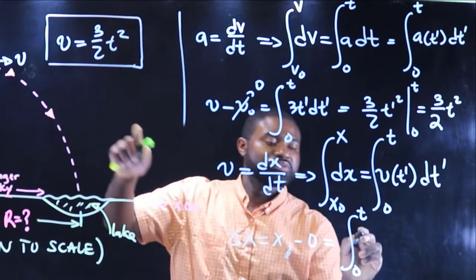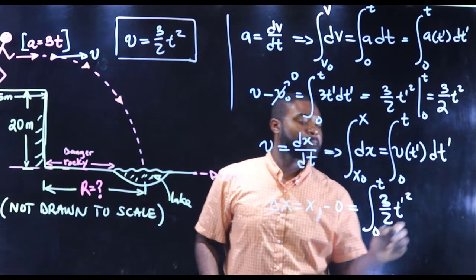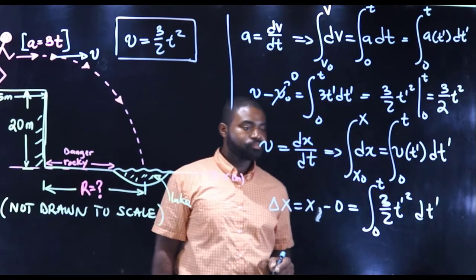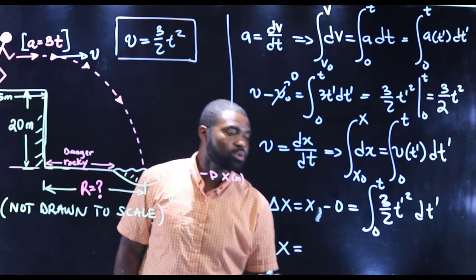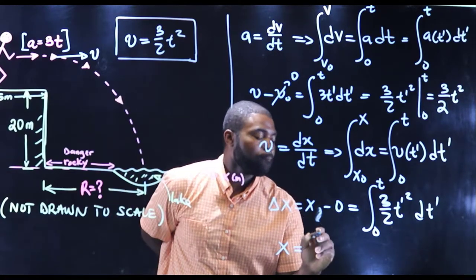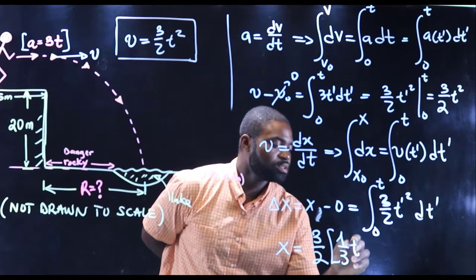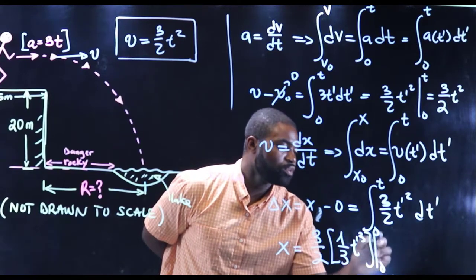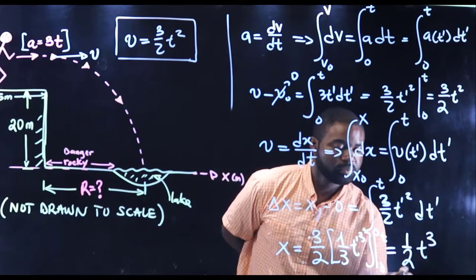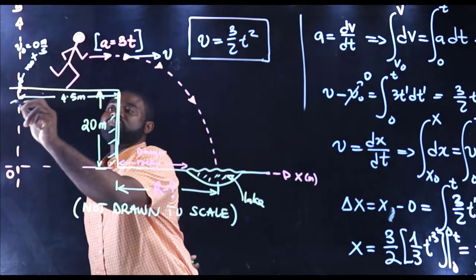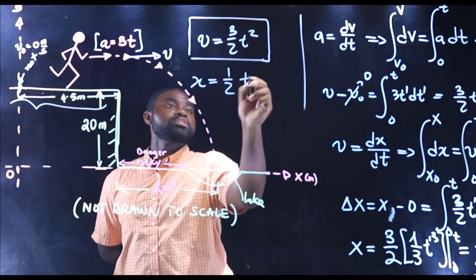Equal to the integral from 0 to t of 3 over 2 t prime squared. So if we integrate, the integral from 0 to t of 3 over 2 t prime squared, this is going to be equal to half t cubed. So x, the distance from here to here, x, will be equal to one half t cubed.